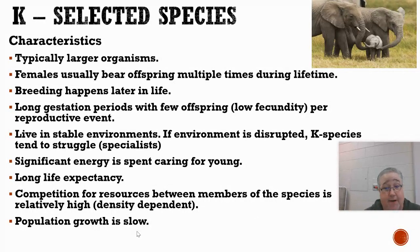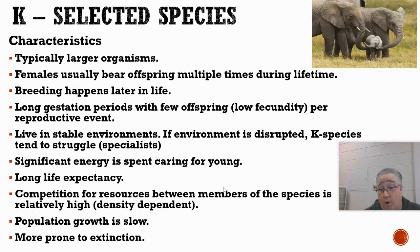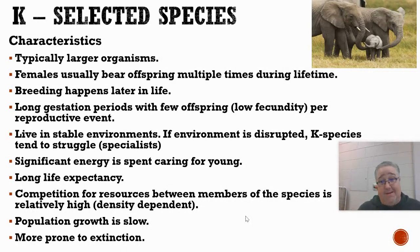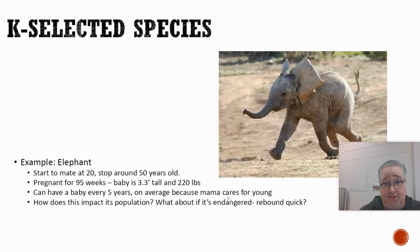Population growth for K-selected species is fairly slow — that has a lot to do with their fecundity and gestation. They're also more prone to extinction. If elephants are being poached or their habitat is disappearing, they'll have trouble surviving. Because they don't give birth very often and have a low fecundity, it's going to be difficult for them to rebound and get their populations back up. That's a K-species — elephant is a good example.